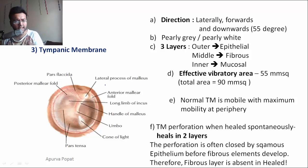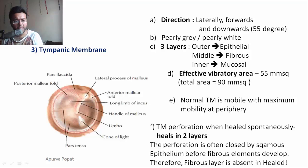After pinna and external auditory canal, we have the tympanic membrane as our next topic in the anatomy of the external ear. The tympanic membrane is a thin, translucent, see-through membrane — certain structures can be seen through it.